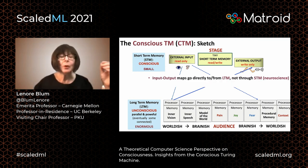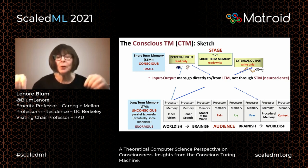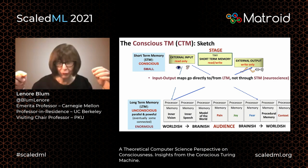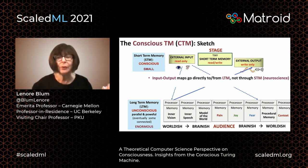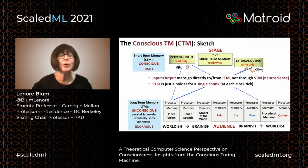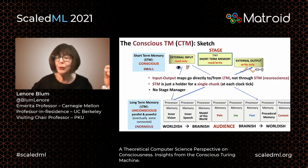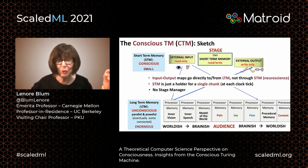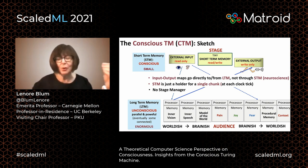Having an expressive inner language is an important component of the feeling of consciousness. We also have output maps going from long-term memory processors through actuators to the outside world, where brainish is translated into worldish. The input-output maps go directly to and from the long-term memory processors, not through short-term memory as in Baars' sketch. The short-term memory is just a holder of a single chunk of information. We have no stage manager — since we can get away without one, and since we are looking for simplicity, no stage manager.